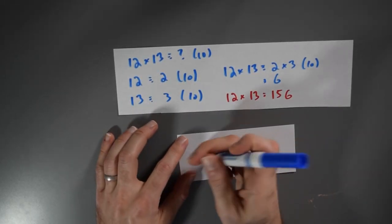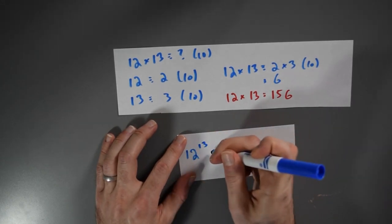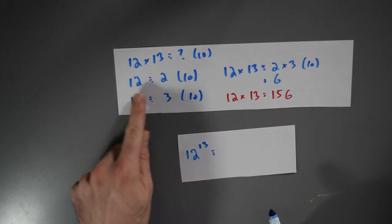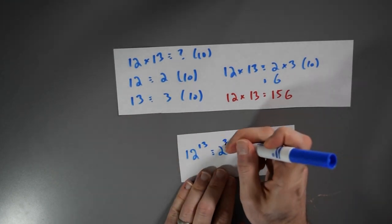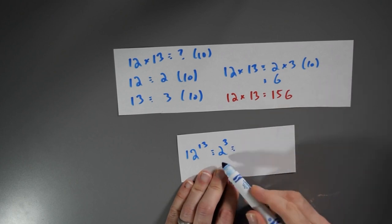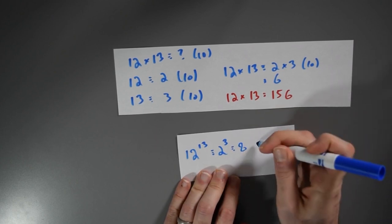Let's compute 12 to the 13th power. Well, 12 is 2 modulo 10. 13 is 3 modulo 10. And 2 to the 3rd, that is 8.